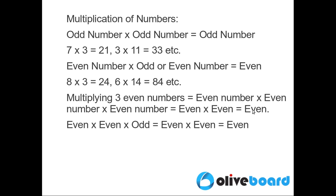Now if we multiply 2 even numbers and an odd number, the product of the even and odd would result in an even number, which means we are multiplying 2 even numbers, which results in an even number.